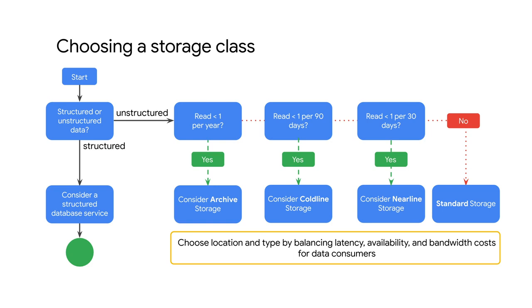Use a multi-region when you want to serve content to data consumers that are outside of the Google network and distributed across large geographic areas, or when you want the higher data availability that comes with being geo-redundant.